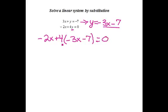Now I'm going to start by distributing this 4 to both terms, which leaves me with negative 2x minus 12x minus 28 equals 0.